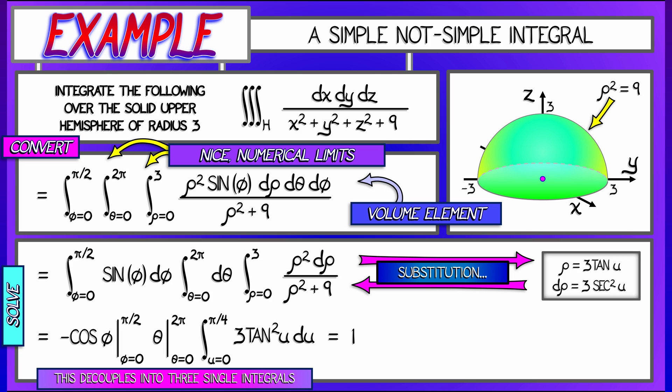When I evaluate the cosine phi term, that gives me a 1. When I evaluate the theta term from 0 to 2 pi, that gives me 2 pi. When I do that last integral, and please do that one on your own, I'm going to get a final answer of 6 pi times quantity 1 minus pi over 4.